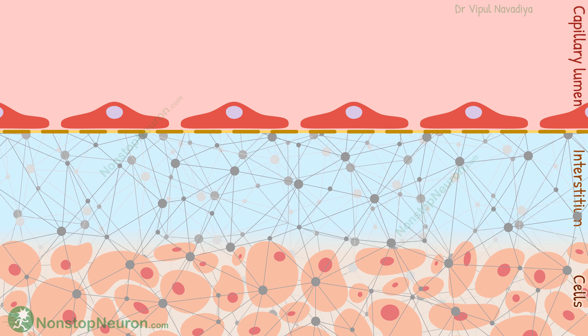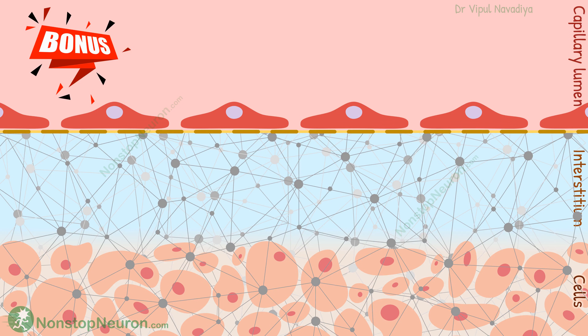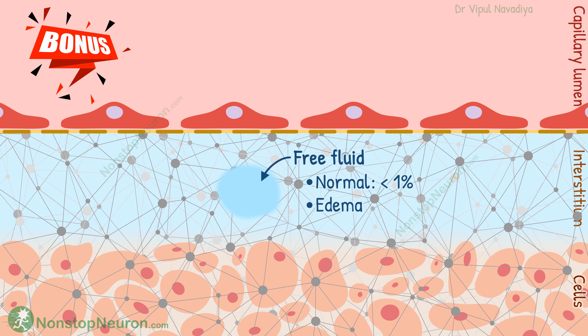Now, for sticking with me until the end, here is a bonus point for you. Scattered in the interstitium are small areas of free fluid where proteoglycan filaments are absent. Normally, they contain less than 1% of interstitial fluid. But in edema, these pockets expand, so the percentage of free fluid increases.